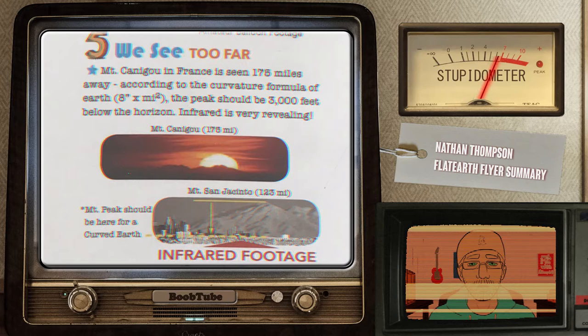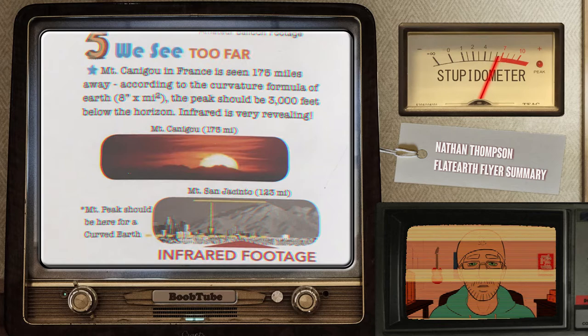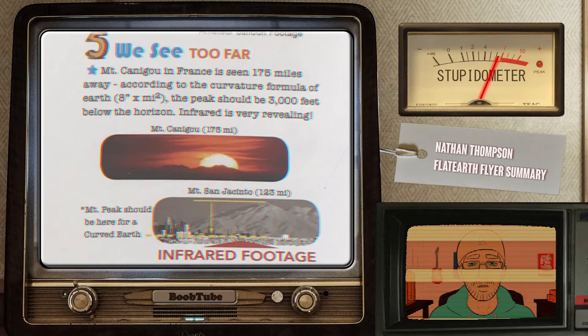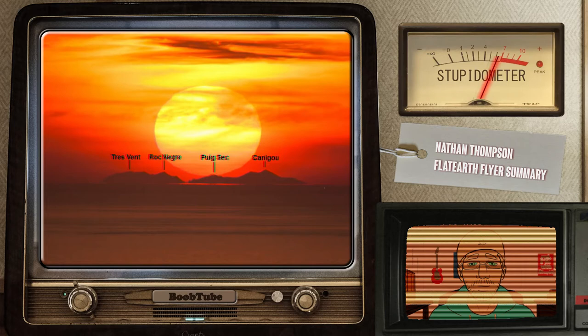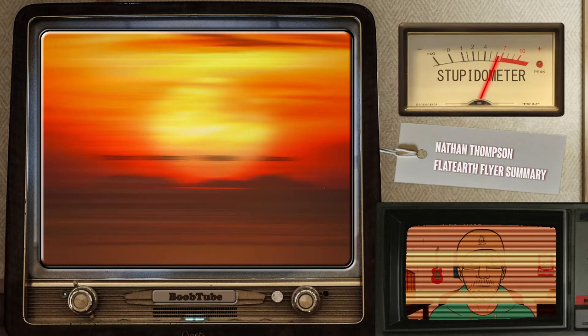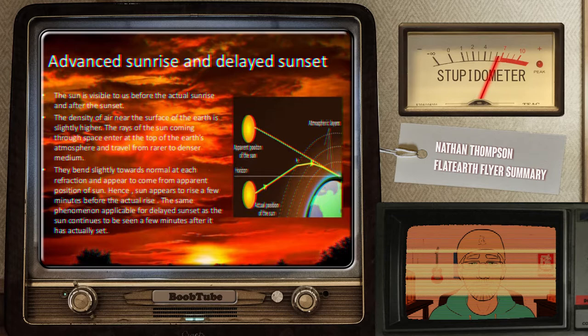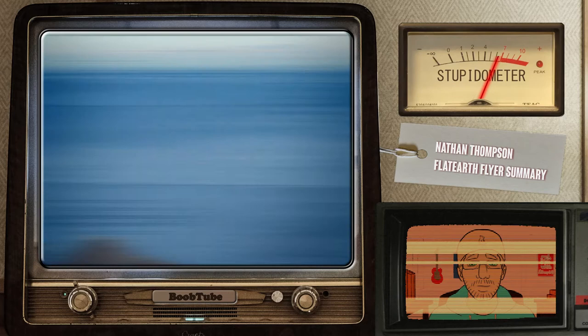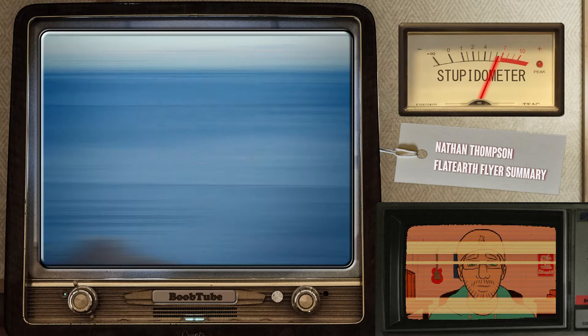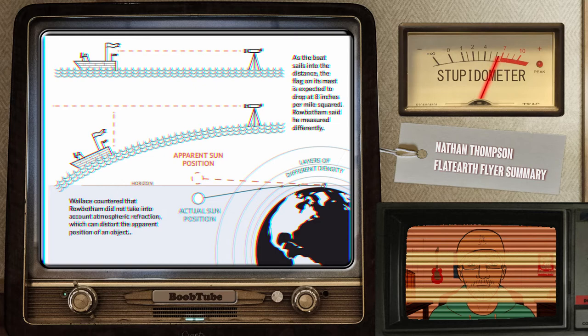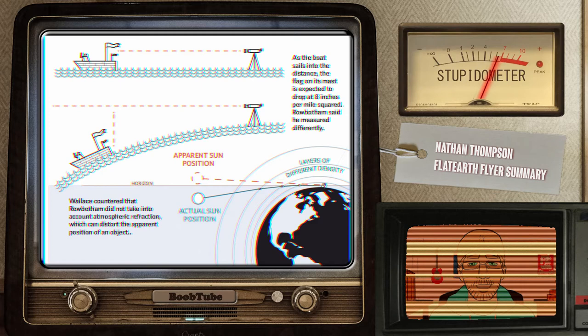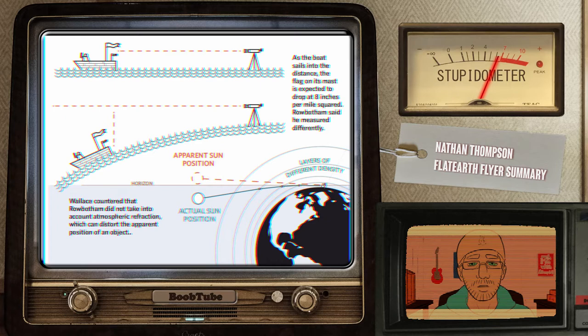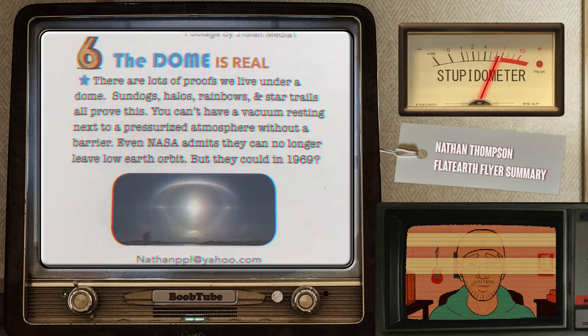Point 5: We see too far. Mount Kenigu in France is seen 175 miles away. According to the curvature formula of Earth — 8 inches per mile squared — the peak should be 3,000 feet below the horizon. Infrared is very revealing. So yes, it is true — but you only get to see it less than 3 months in a year under certain weather conditions. Refraction is how this magic happens; it's the reason why we see sunrise and sunset before or after they actually happen. You can see a similar phenomenon like Corsica being seen from Monaco during early morning. If something looks the way it does only at certain times under certain conditions, can there be some other explanation? And what is the explanation for how it looks the rest of the time?